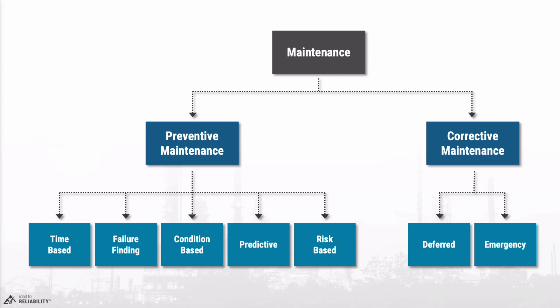Preventive maintenance — the maintenance we do before a failure has occurred — can be split into five different types: time-based maintenance, failure-finding maintenance, condition-based maintenance, predictive maintenance, and risk-based maintenance. Corrective maintenance is essentially split into two types: deferred corrective maintenance and emergency maintenance. In the next few slides, I'm going to talk through each of these types in a bit more detail.